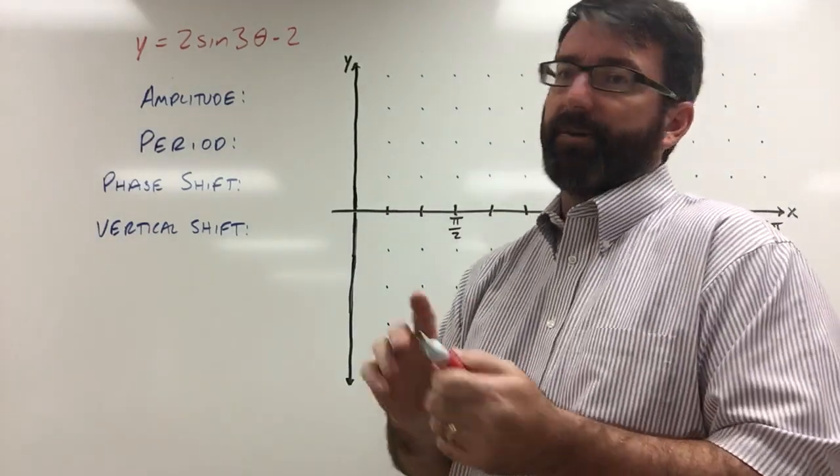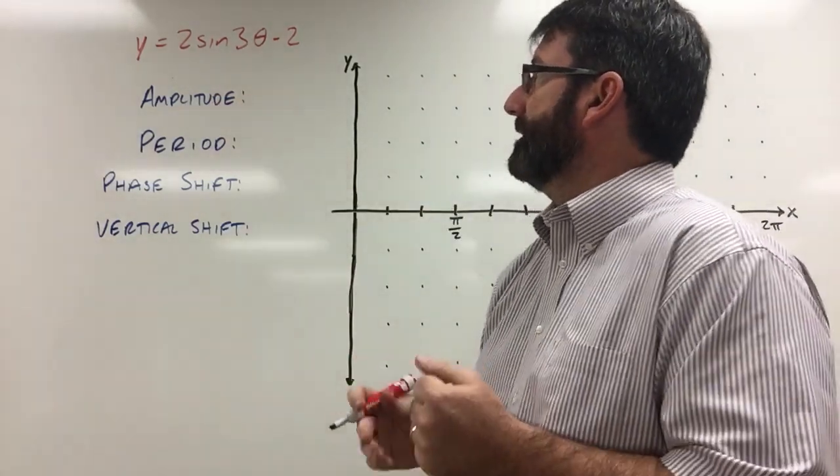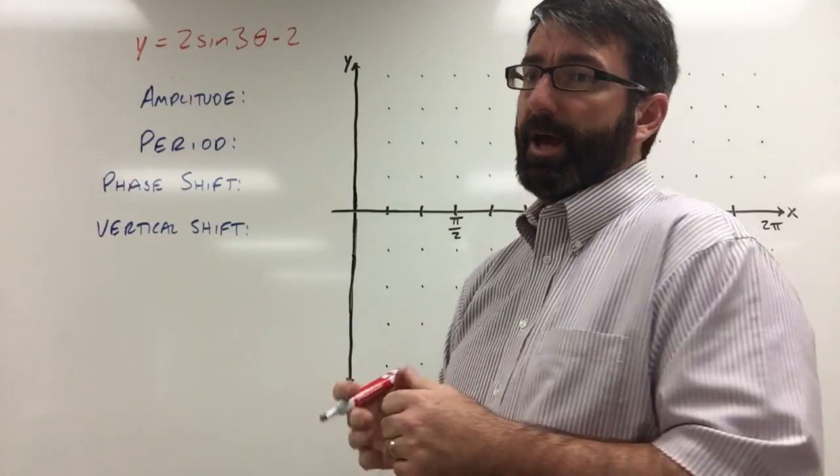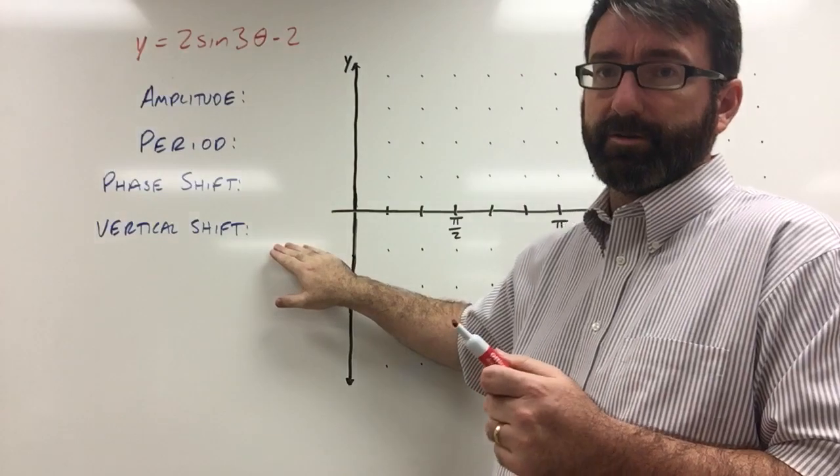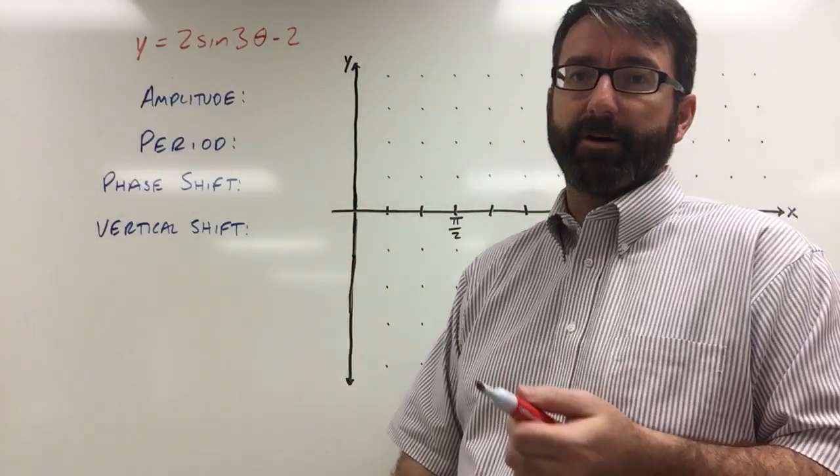All right, for this problem, we're given the function y equals 2 sine of 3 theta minus 2. And we're asked to find the amplitude, period, phase shift, and vertical shift, and then to graph the function.